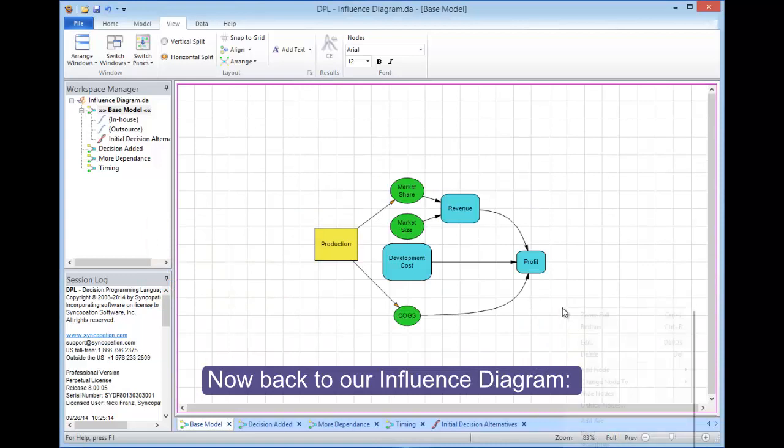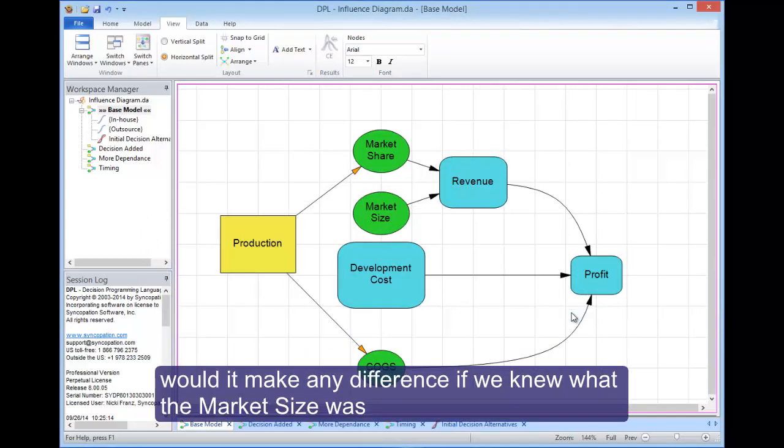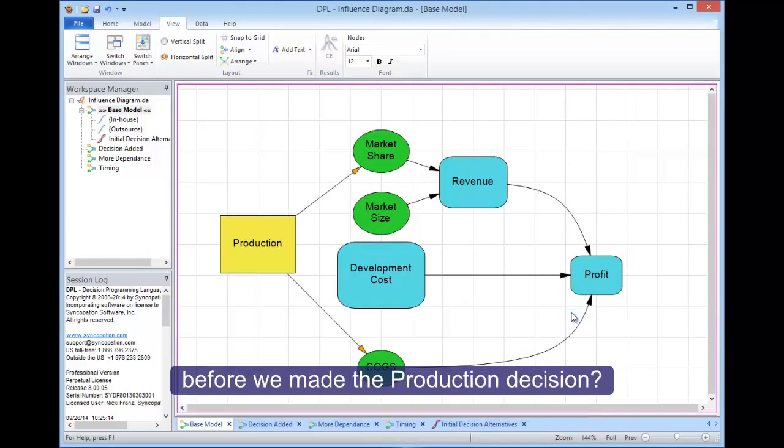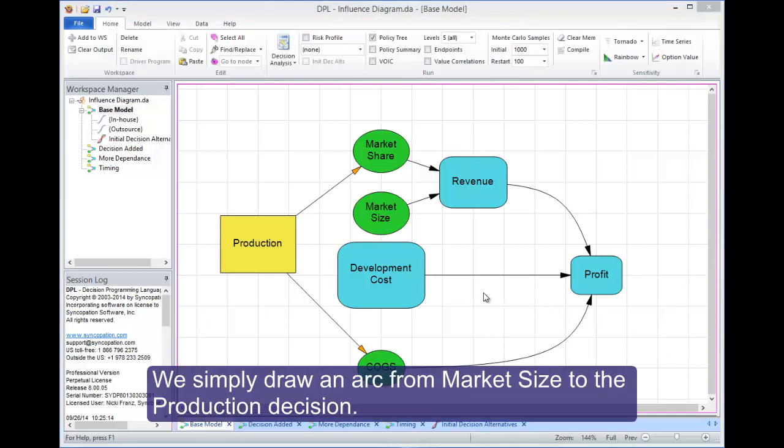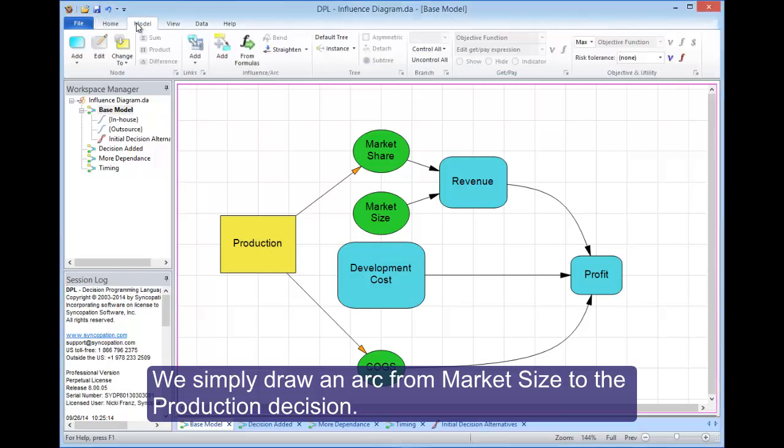Now back to our influence diagram. Would it make any difference if we knew what the market size was before we made the production decision? Well, that's an easy answer to get in DPL.